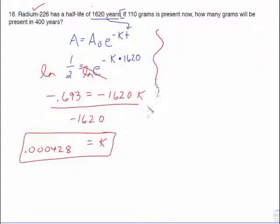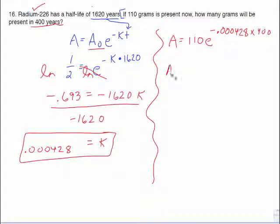Now we can go at it from the standpoint of, we want to figure out how much is left, starting with 110 grams. That's our a sub 0, what we started with, e to the negative k, which is 0.000428 times 400, because that is the t. And that is just a straight calculator problem. And when you enter that in the calculator, you'll get 92.69 grams.